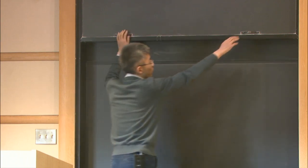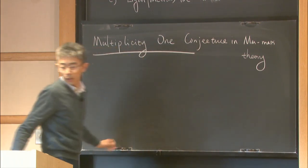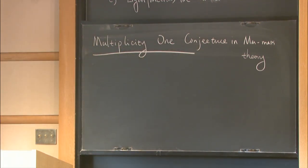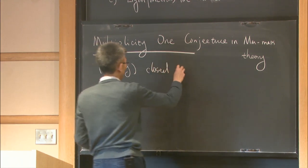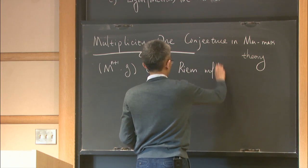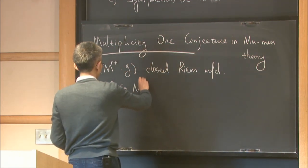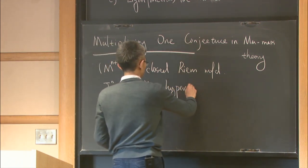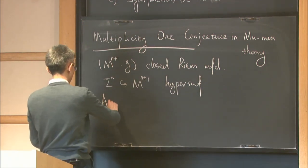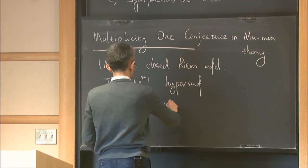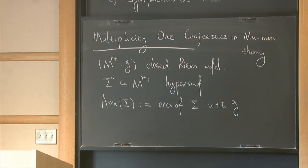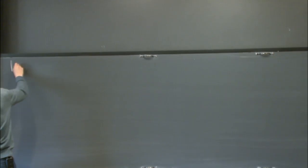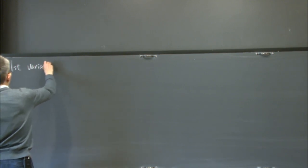Going back to minimal surfaces: I apologize if someone attended my lecture at Princeton University; I'll try to give more details today. In my talk, M will be a closed Riemannian manifold, and sigma is always a hypersurface. We are interested in the area functional — this denotes the area of sigma with respect to the given Riemannian metric.